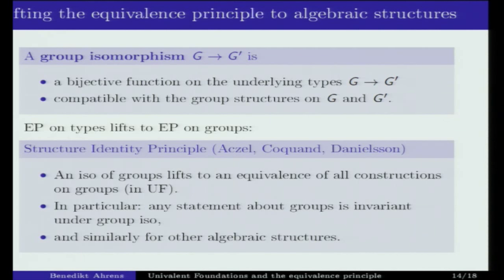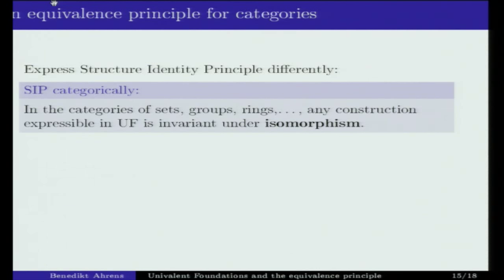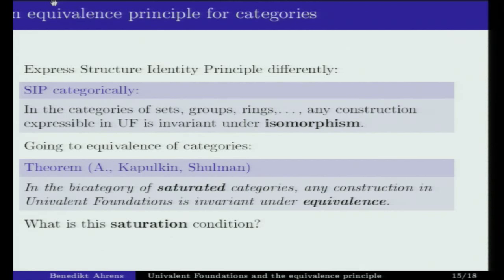This is true not only for groups but also for other algebraic structures like rings. In the categories of sets, groups, rings, etc., any construction expressible in univalent foundations is invariant under isomorphism. A similar theorem holds at the level of higher categories: in the bicategory of saturated categories, any construction expressible in univalent foundations is invariant under equivalence — the appropriate notion of sameness for objects of a bicategory.